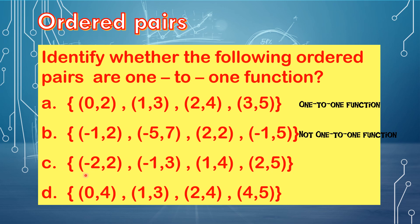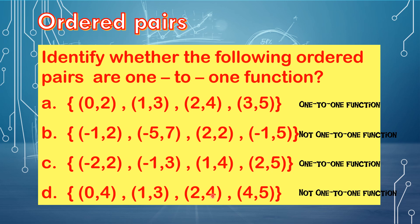For letter C, the domains are: negative 2, negative 1, positive 1, and positive 2 — no repeated x-values. The y-values are: 2, 3, 4, and 5 — no repetition. Therefore, these ordered pairs are a one-to-one function. For letter D, the domains are: 0, 1, 2, and 4 — no repetition. But in the range: 4, 3, 4, and 5 — we have two 4s. Therefore, this is not a one-to-one function.